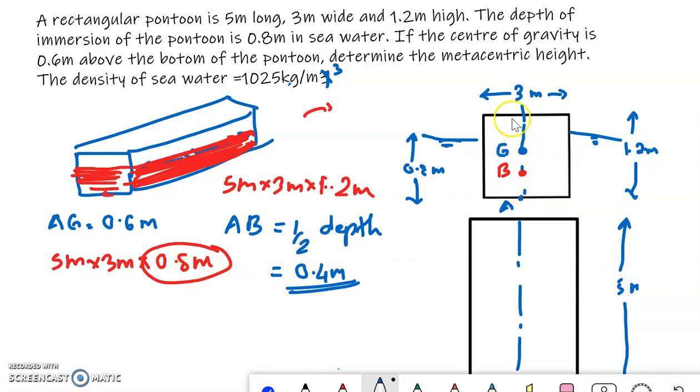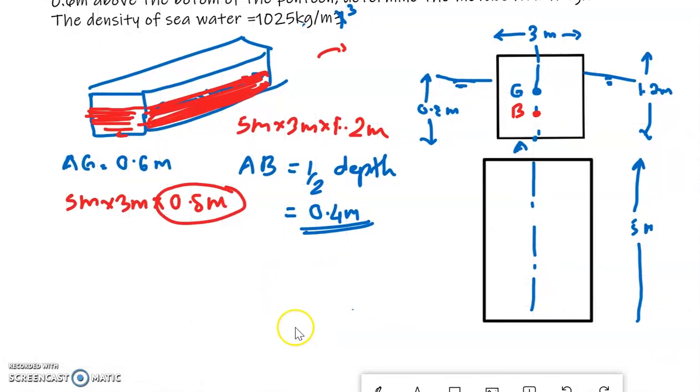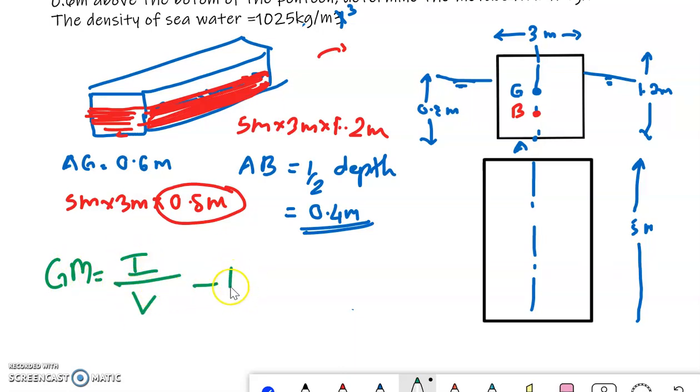We have to find out metacentric height. So metacentric height, we know the equation: GM is equal to I by V minus BG. BG is distance from center of buoyancy to center of gravity.